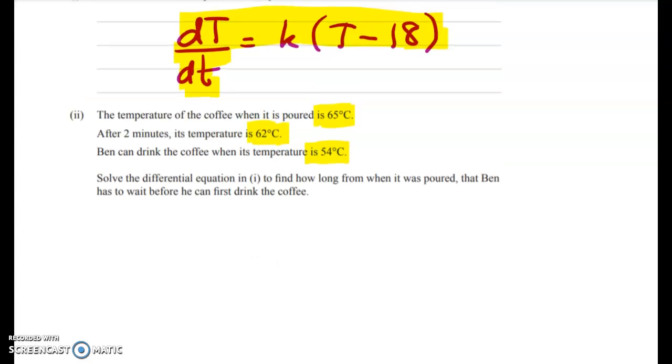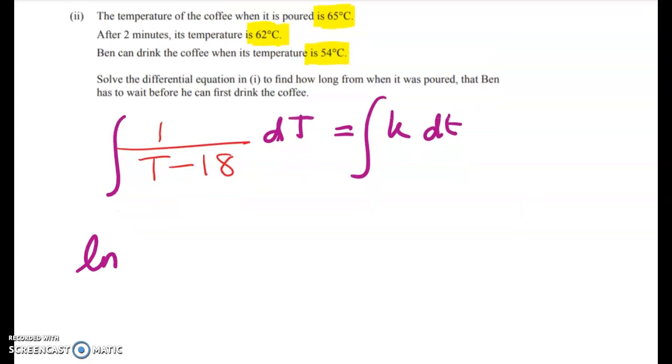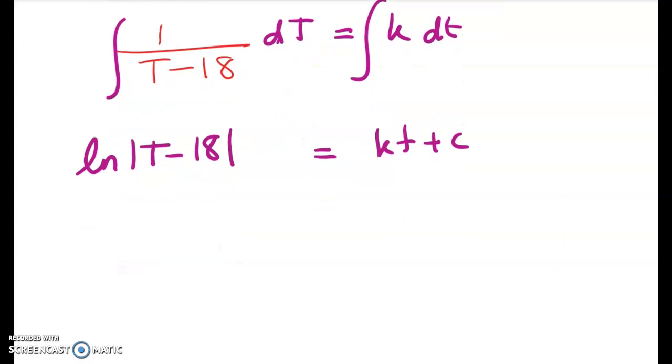Okay, so separating the variables gives me 1 over (T minus 18). And now we can integrate both sides. So here we get the natural log of (T minus 18), and over here we're going to put our constant of integration. We're going to go e to both sides, leaving me with T minus 18 is equal to e to the (kt plus C).